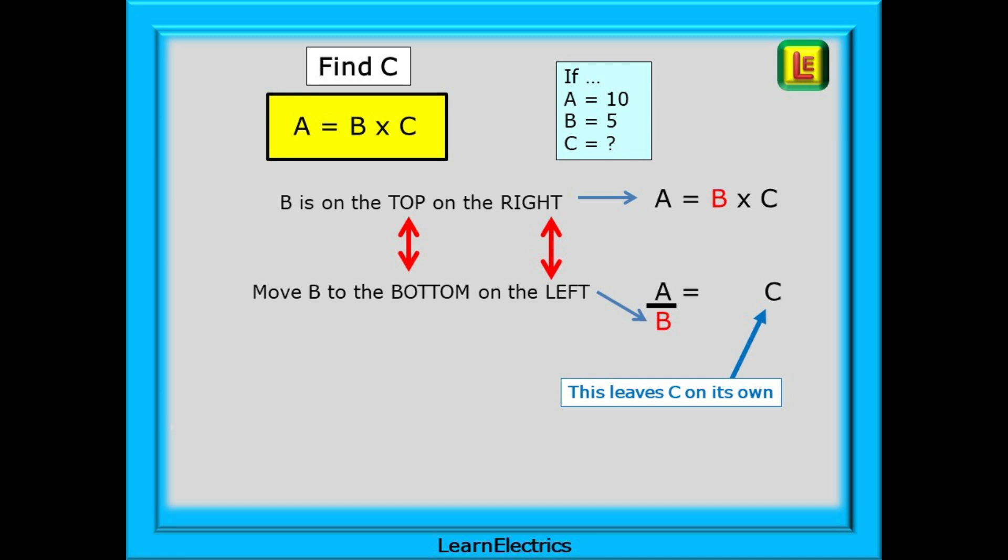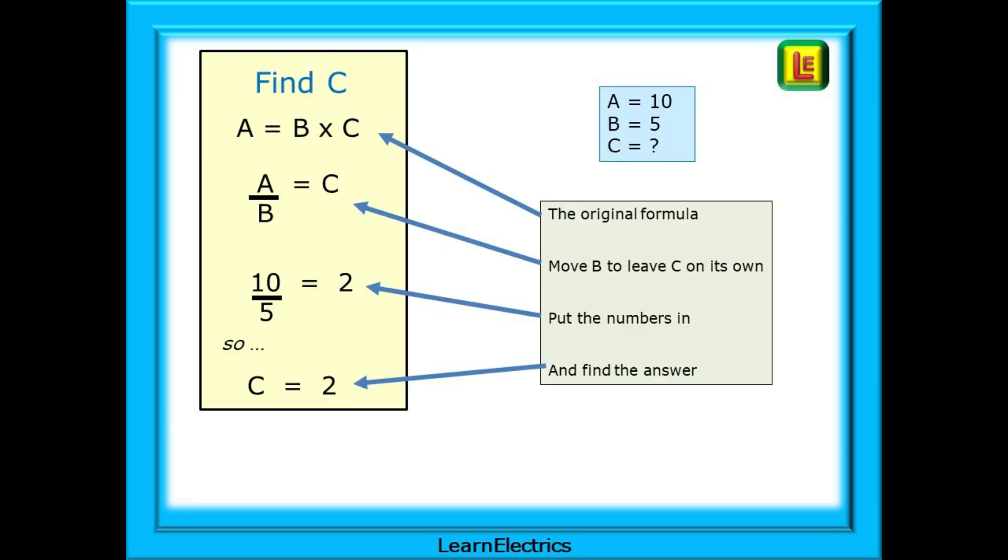If A equals B times C, and we already know that A equals 10 and B equals 5, the rest is easy. Think of the equals sign as the middle of a seesaw. To keep the seesaw balanced, if we do something to one side, we must do something to the other. In this case, we need to move B away from C. B is on the top on the right, so move it to the bottom on the left. C is now on its own, and C is equal to A divided by B. Our answer is C equals 2 and all formulas come down to simple steps like this.